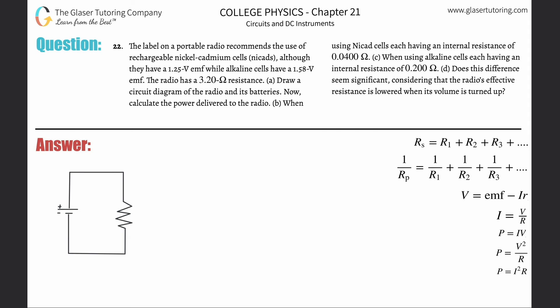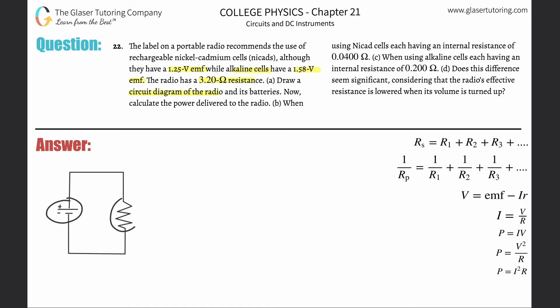Number 22: the label on a portable radio recommends the use of rechargeable nickel-cadmium cells (NiCads). Although they have a 1.25 volt EMF, alkaline cells have a 1.58 volt EMF. The radio has a 3.2 ohm resistance. Part A: draw the circuit diagram of the radio and its batteries. Assuming one battery, here's the battery and here's the resistance, connected in series — representing either the NiCad or the alkaline cell.